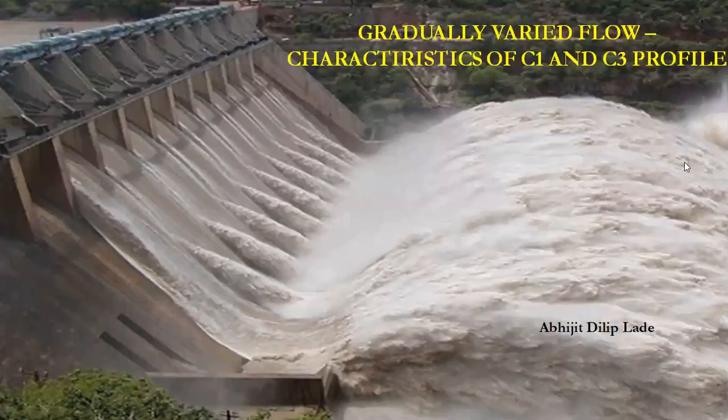Hello everyone. Today we will discuss the characteristics of the critical flow profiles that are found on the critical slope. We have earlier seen that two types of GVF profiles are possible on a critical slope — C1 and C3. Today we'll look at some details of those profiles.